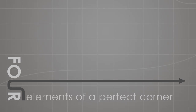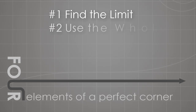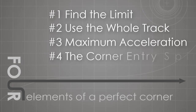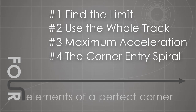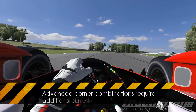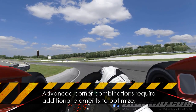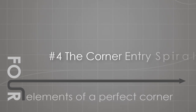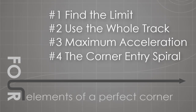A driver has more to go on than just the basic physics alone. If you are successful in maximizing force in the ideal directions, four primary things will happen — we call these the four elements of a perfect corner. You can use these to work up a corner and identify your mistakes. These four elements apply to all corners, but advanced combinations such as chicanes and double apexes will require some additional elements to optimize correctly. Let's go through the four elements in increasing order of how important they are to achieving a good lap time.